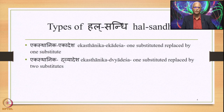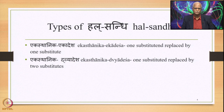The five instances of Dvishthanika Ekadesha of Ach Sandhi are: Guna Sandhi, Vraddhi Sandhi, Pararupa Sandhi, Savarnadirgha Sandhi, and Purvarupa Sandhi. In Hal Sandhi, however, we have Ekasthanika Dvyadesha, where one substituent is replaced by two substitutes — Ekasthanika Dvyadesha.